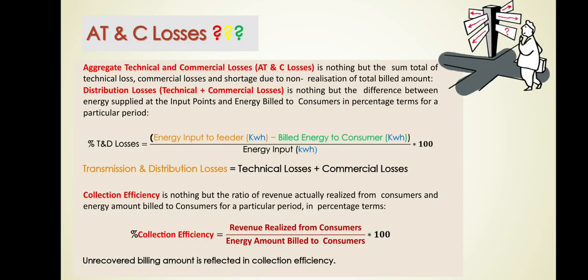AT&C losses can be broadly defined as the difference between whatever has been generated and whatever is received in the form of money from that generation. If I generate one unit, transmit it, and the consumer receives some portion of that unit — because there are losses — they will pay me with respect to the consumed energy. That may be only half a unit, because we know that around 50% losses exist in transmission and distribution.